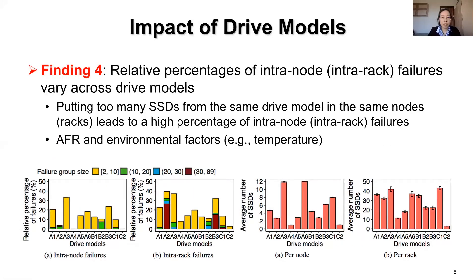We analyze the impact of drive models on correlated failures. The left figures show that the relative percentages of intranode or intrarack failures vary across drive models. We also examine the average number of SSDs per node or rack for different drive models. In general, putting too many SSDs from the same drive model in the same nodes or racks leads to a high percentage of intranode or intrarack failures.